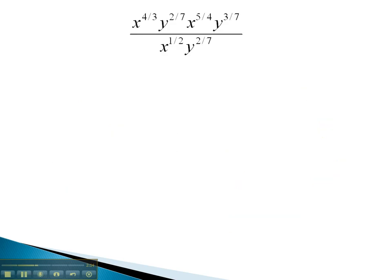In this problem, we will want to simplify the numerator first because of the invisible parentheses around the numerator and the denominator. When we try and combine the x's together into a single x in the numerator, what we will want to do is add those exponents.